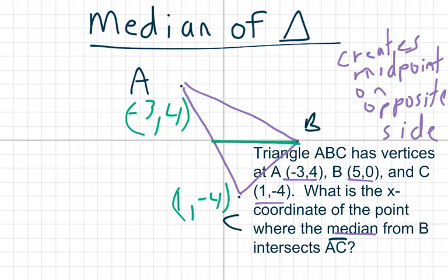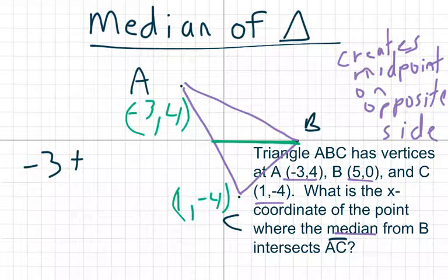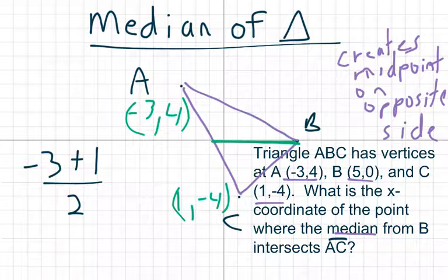And it just wants the x-coordinate. So I'm just finding the midpoint of negative 3 and 1. So I just find their average. So negative 3 plus 1. And I find their average.